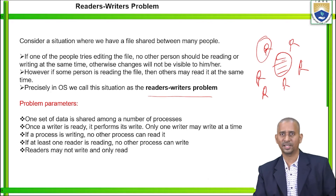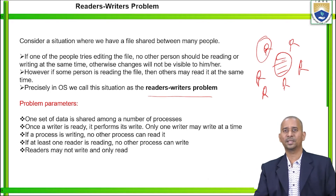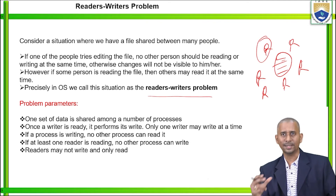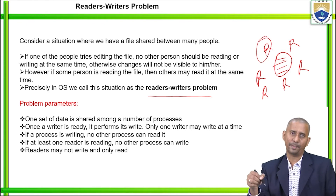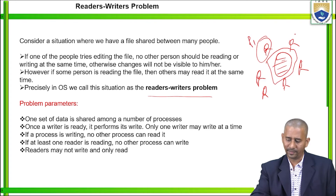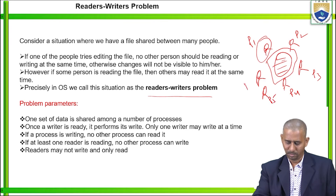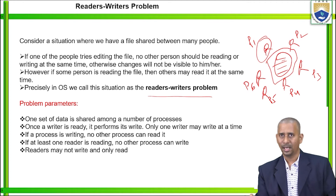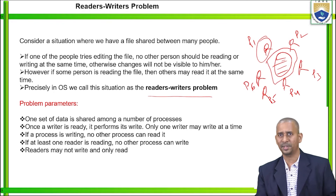That is the readers-writers problem. What are the various problem parameters? One set of data is shared among a number of processes — P1, P2, P3, P4, P5, P6 processors. Each process may act as a reader or a writer depending on the requirement. Once a writer is ready, it performs its write operation, and at that time only one writer may write at a time. If any one process is writing, no other process can read it.